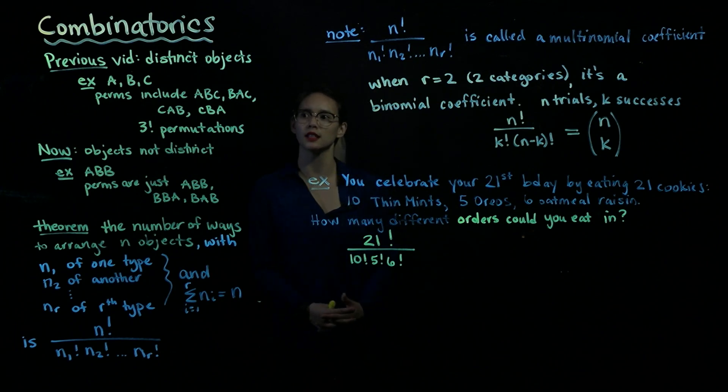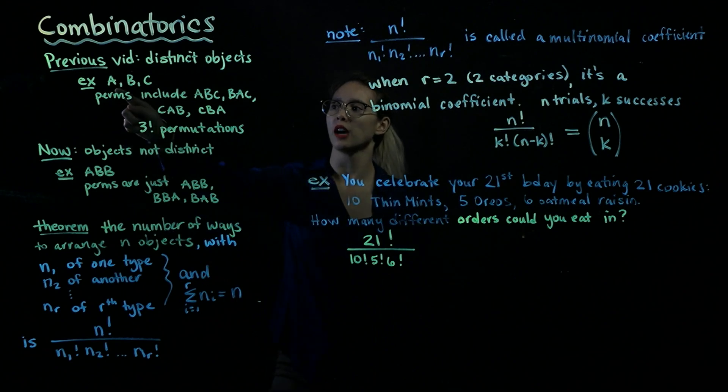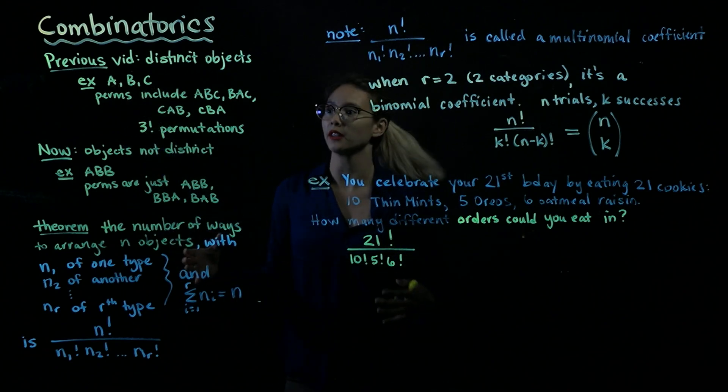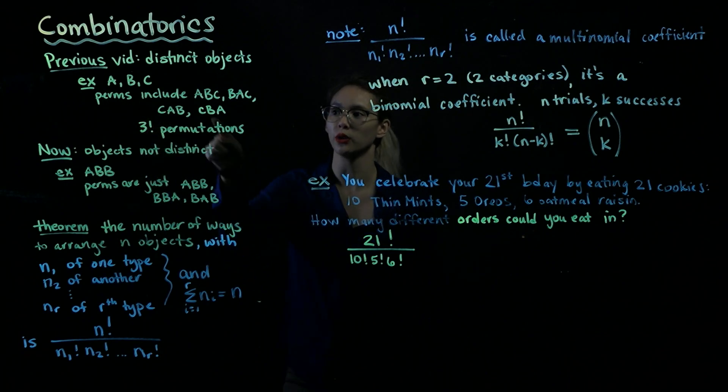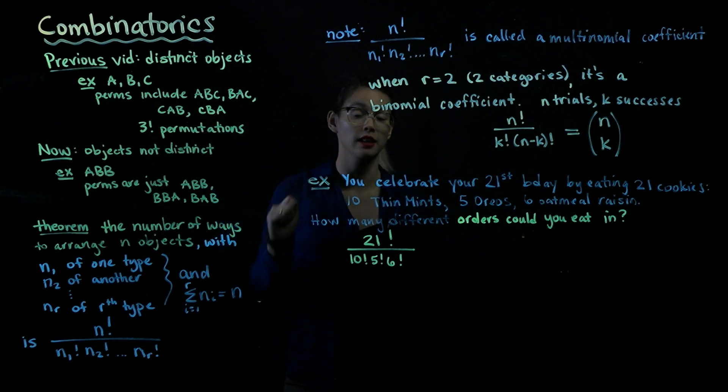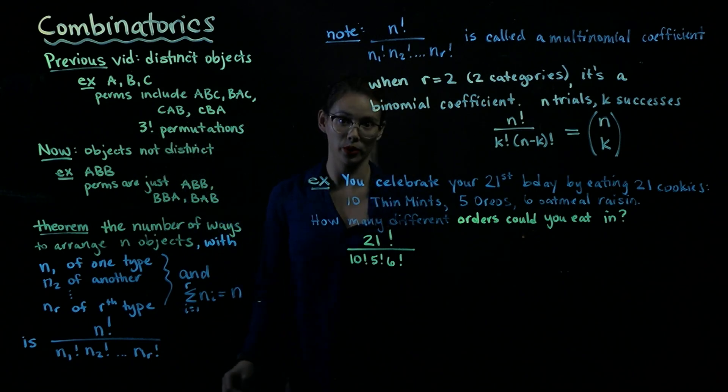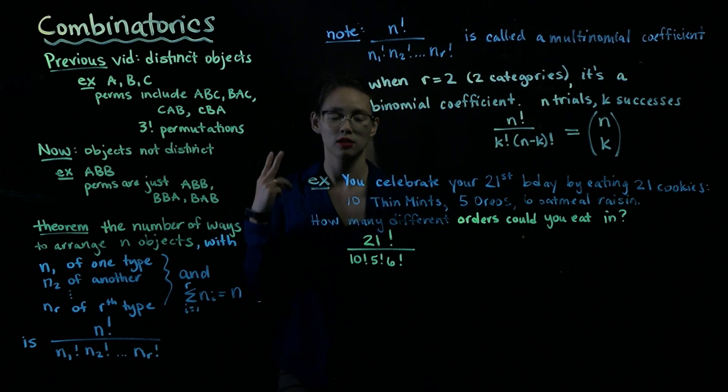So what do we mean by distinct? Imagine that we have objects A, B, and C. We can tell them apart. So permutations for this would include A first, then B, then C, BAC, CAB, CBA, and so on. So there would be three factorial different permutations because we'd have three options for the first slot, two options for the second, and then one option for the last one.